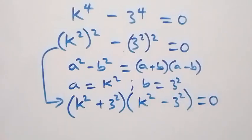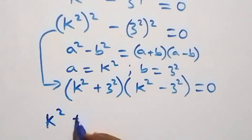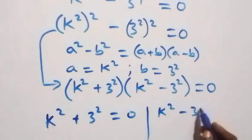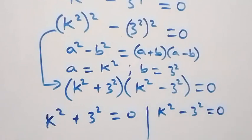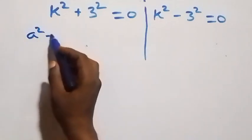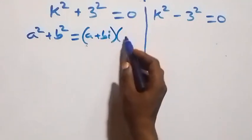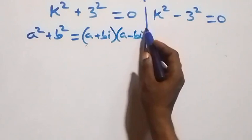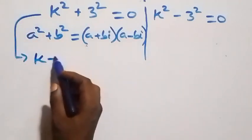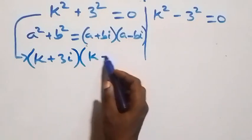From here we have two possible cases: k squared plus 3 squared equals zero, or k squared minus 3 squared equals zero. Solving the first case, we use the sum of squares identity: a squared plus b squared equals open bracket a plus bi close bracket times open bracket a minus bi close bracket. This gives us open bracket k plus 3i close bracket times open bracket k minus 3i close bracket.